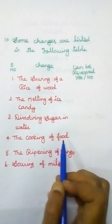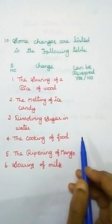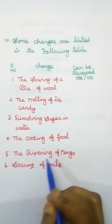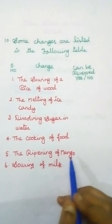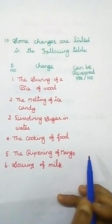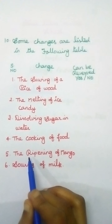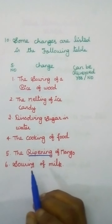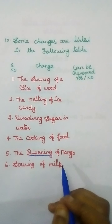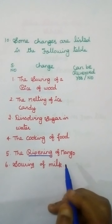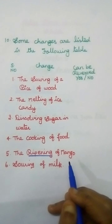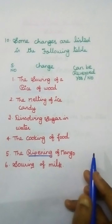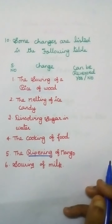Fourth row: the cooking of food. Can it be reversed? Yes or no. Fifth row: the ripening of mango. Can it be reversed? Yes or no. Sixth row: the souring of milk. Already I explained what souring means. Can it be reversed? If reversible, write yes; if irreversible, write no.